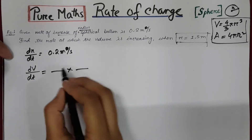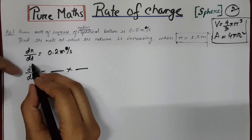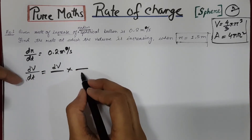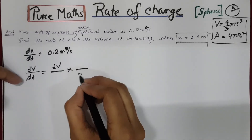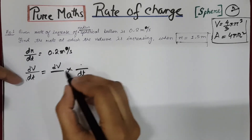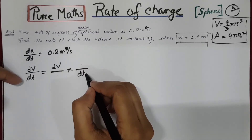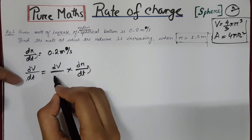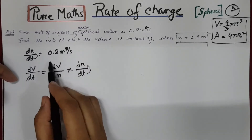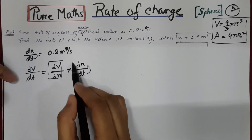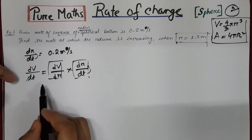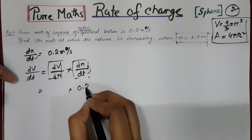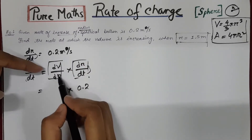I am taking two terms here: dV on top and dt at the denominator of the second term. We need to fill up these two spaces. Above dt we know dr, so replace these two places by dr. If we multiply dV/dr and dr/dt, then we will get dV/dt. Between these two terms, dr/dt is 0.2, and we need dV/dr.